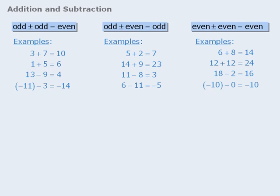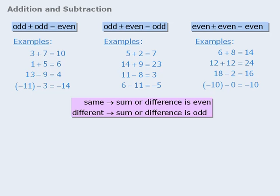These rules can be summarized as follows. If the two numbers are the same — that is, they are both odd or both even — then the sum or difference will always be even. If the two numbers are different — that is, one is odd and the other is even — then the sum or difference will always be odd.